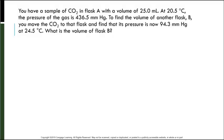Let's do an example with a combined gas law. You have a sample of carbon dioxide in flask A with a volume of 25 milliliters, so this will be our V1, at 20.5 degrees Celsius. That's our T1. We need to convert it to Kelvin, so plus 273.15. And the pressure of the gas is 436.5 millimeters of mercury. That's my P1.